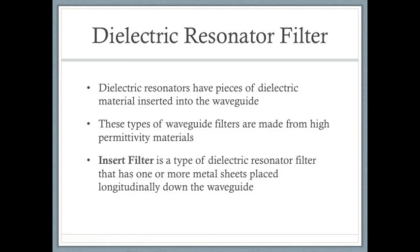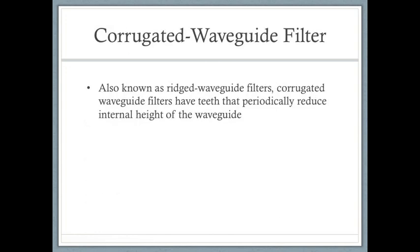The second type is the dielectric resonator filter. Dielectric resonators have pieces of dielectric material inserted into the waveguide and are made from high-permittivity materials. An insert filter is another type of dielectric resonator filter that has one or more metal sheets placed longitudinally down the waveguide.